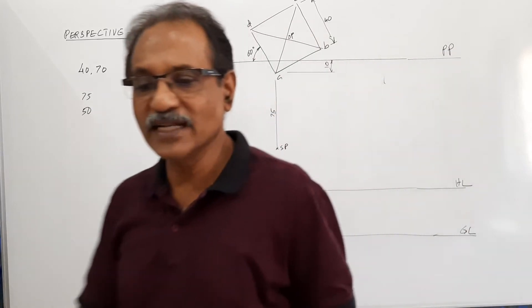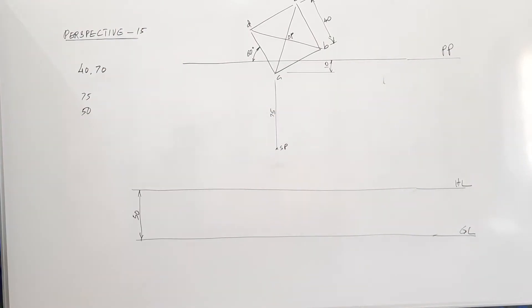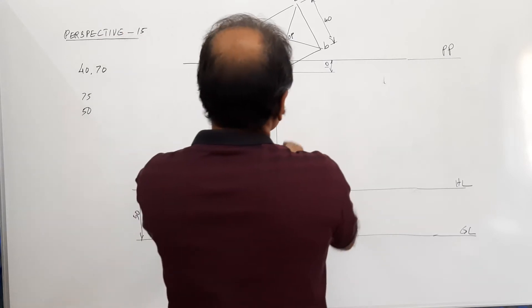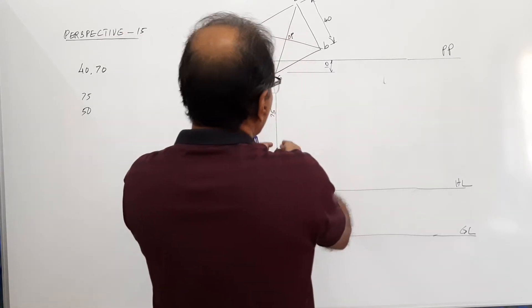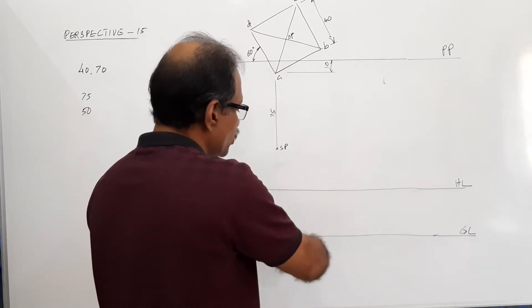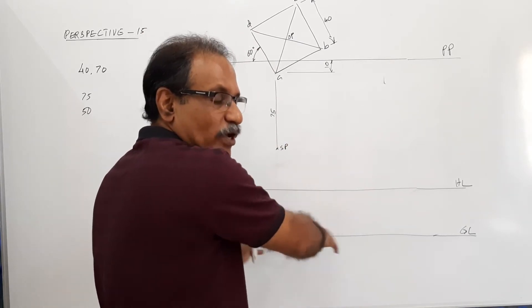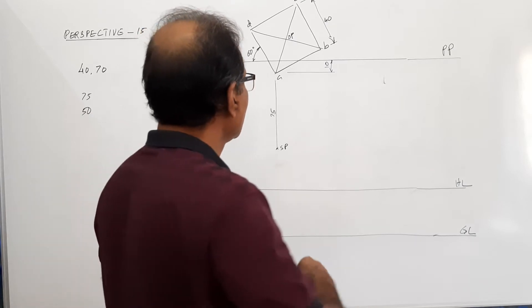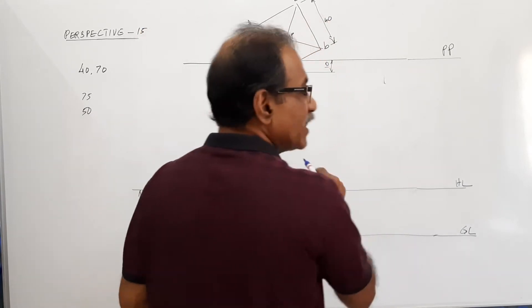Then what do you do? You have to find the vanishing point. If you use visual drawing method, the station point is right in front of the object. So if you go for visual drawing method, there is maximum possibility to get congested drawing at the center. To avoid that, I go for vanishing point method.